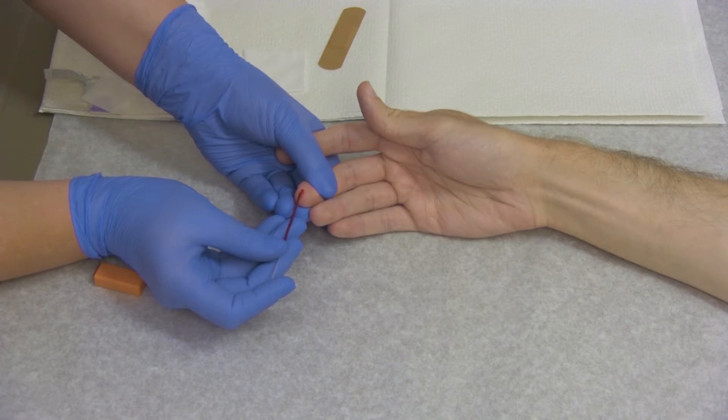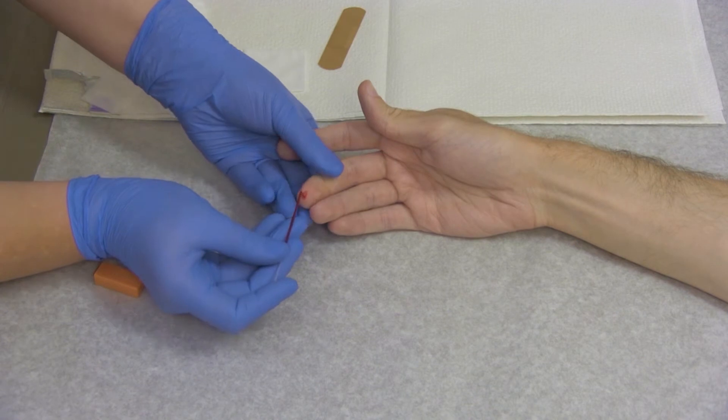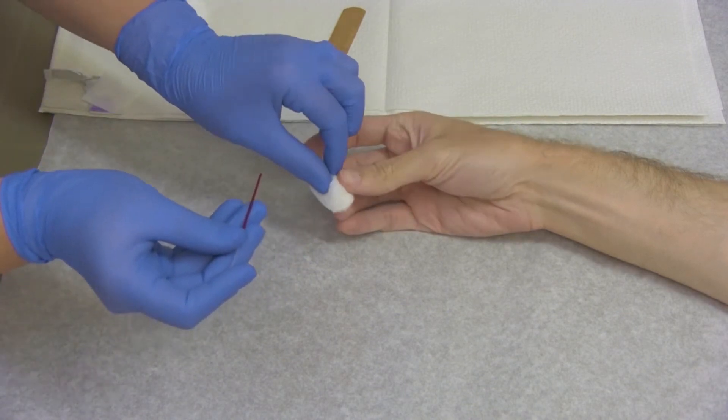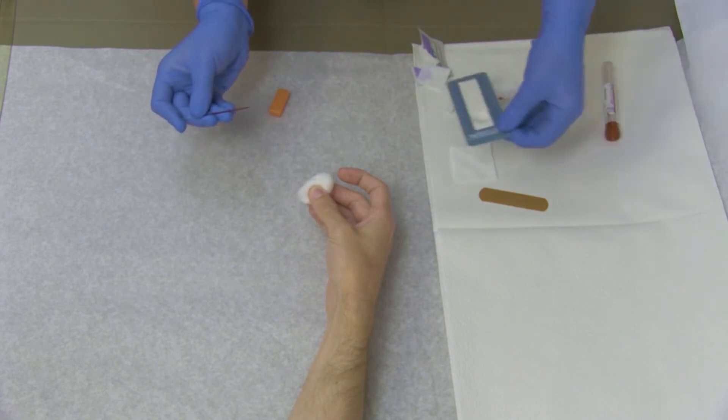Carefully wipe the residue of blood off the end of the tube that touched the drop of blood at the puncture site with a dry, sterile gauze. Gently place the end of the tube in the sealing clay tray.